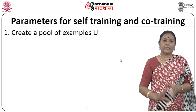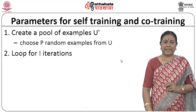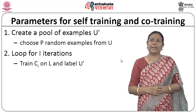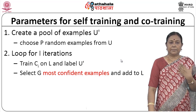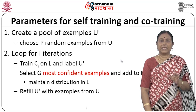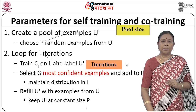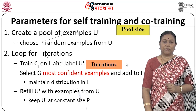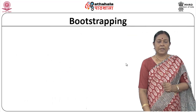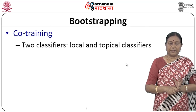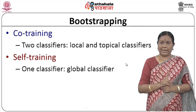The parameters for self-training and co-training: create a pool of examples u-dash, choose p random samples from u, then loop for i iterations — train the classifier on the label set l and label u-dash, select g the most confident examples and add them to l, maintain a distribution in error, and refill u-dash with examples from u keeping it at constant size p. The pool size is the number of seed patterns, the number of iterations, and g is the growth size — how many samples to consider per iteration.